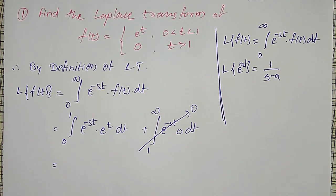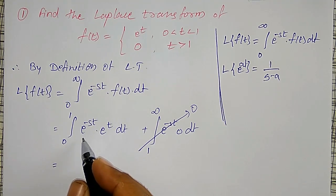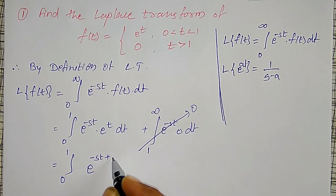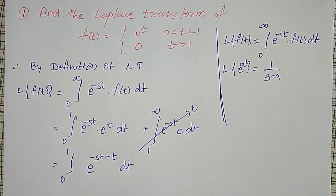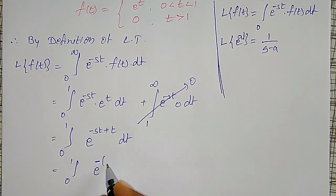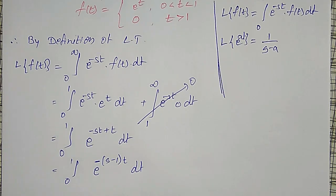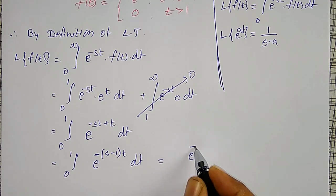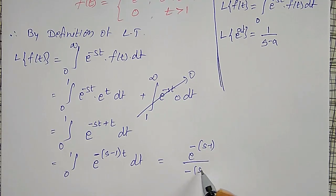So I only need to integrate the first part. Since the bases are the same, I add the powers: integration from 0 to 1 of e^(−st + t) dt. Taking t common from the exponent gives integration from 0 to 1 of e^(−(s−1)t) dt. The result of this integration is e^(−(s−1)t) divided by −(s−1), evaluated between limits.